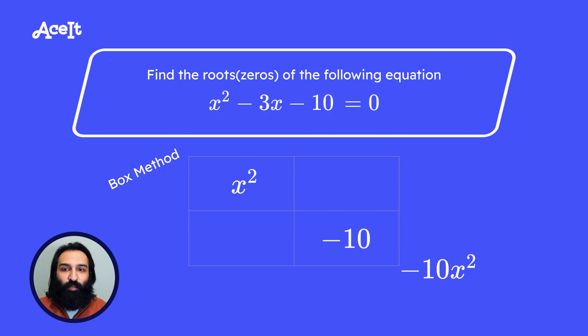The first thing we do in the box method is create a box with four cells or four smaller boxes on the inside. We then write the first term for our equation in the top left box and the last term in the bottom right box. The signs are important so as my high school teacher always said, watch your signs.